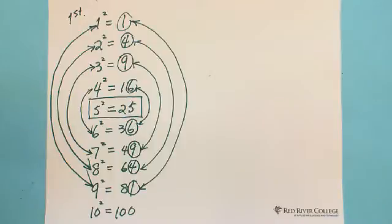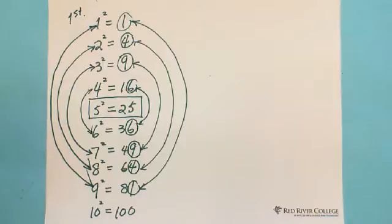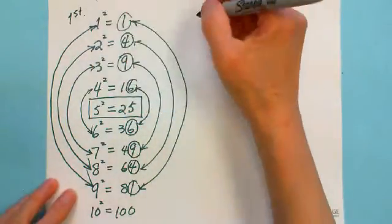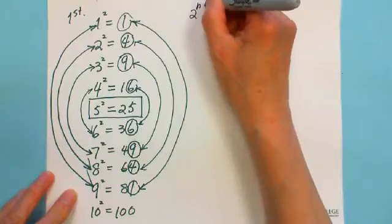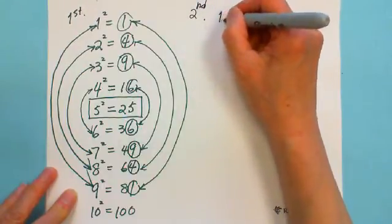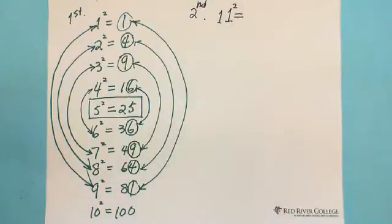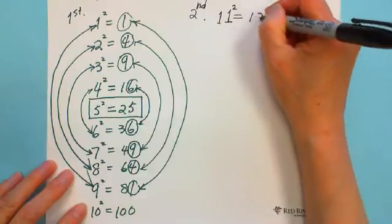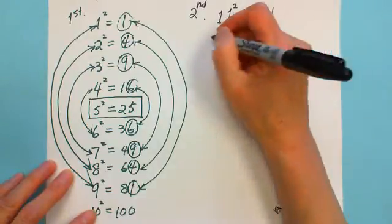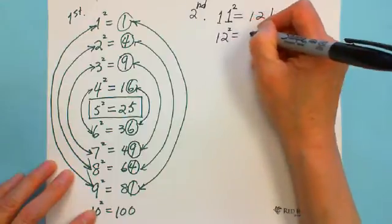Now the second pattern — I'll introduce two-digit squaring. For example, what is 11 squared? Using a calculator you can see 11 squared is 121. And 12 squared equals 144.